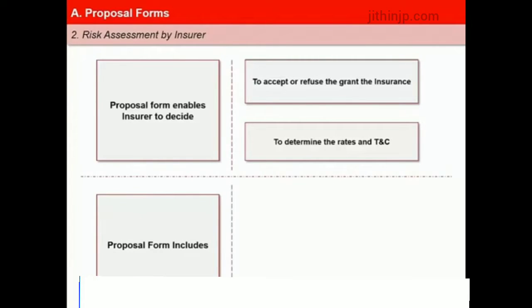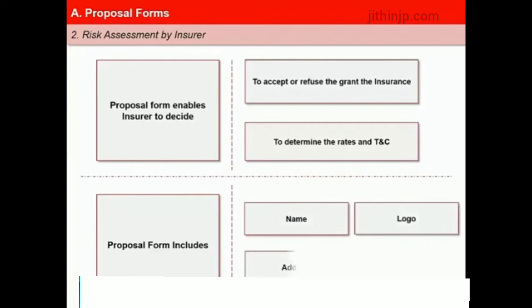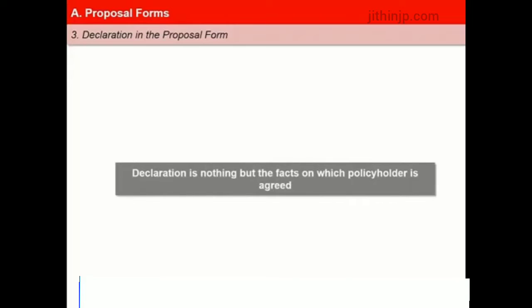Proposal forms are printed by insurers, usually with the insurance company's name, logo, address and the type of insurance that it is used for. It is customary for insurance companies to add a printed note in the proposal form. Insurance companies usually add a declaration at the end of the proposal form to be signed by the proposer. This ensures that the insured takes the pain to fill up the form accurately and has understood the facts given therein, so that at the time of a claim there is no scope for disagreements on account of misrepresentation of facts.